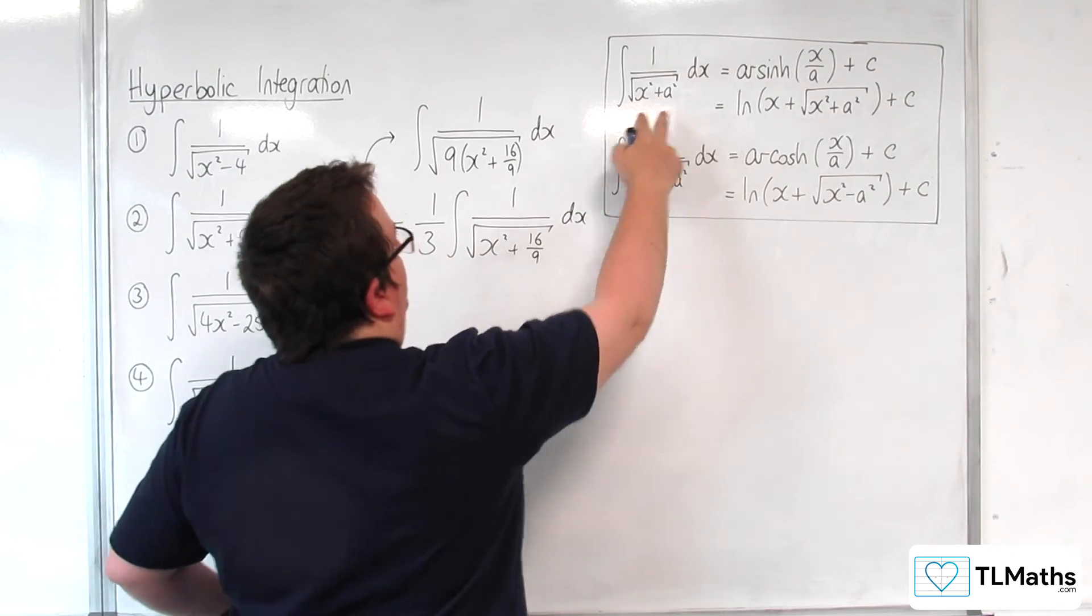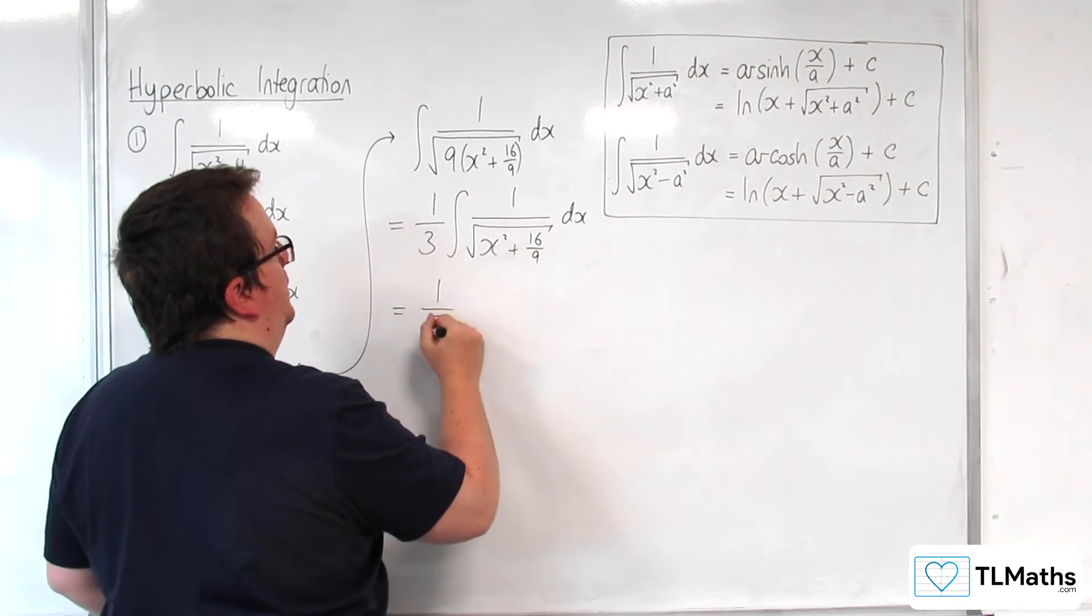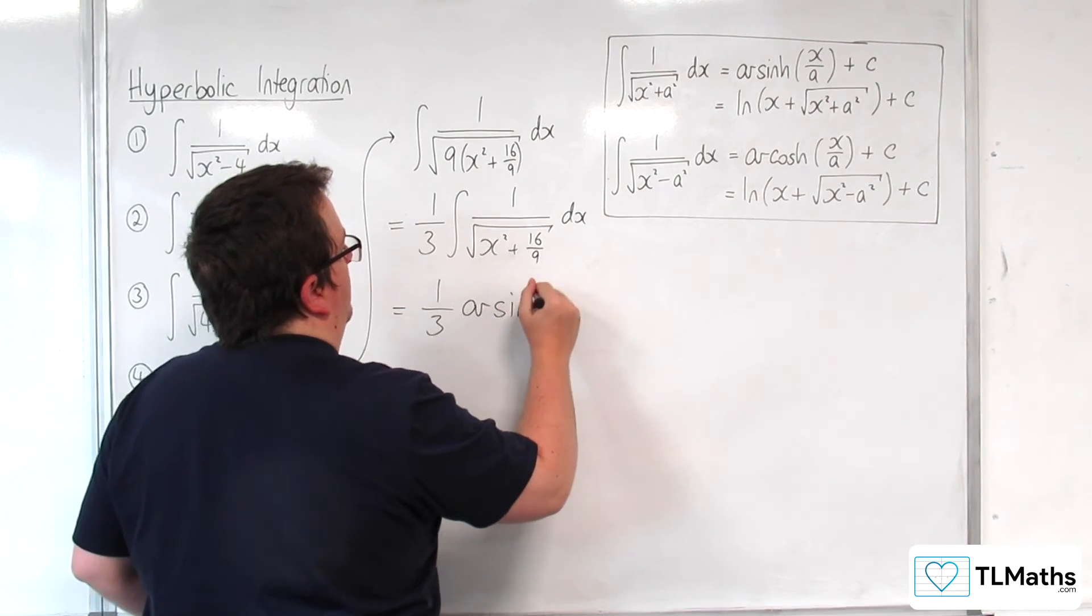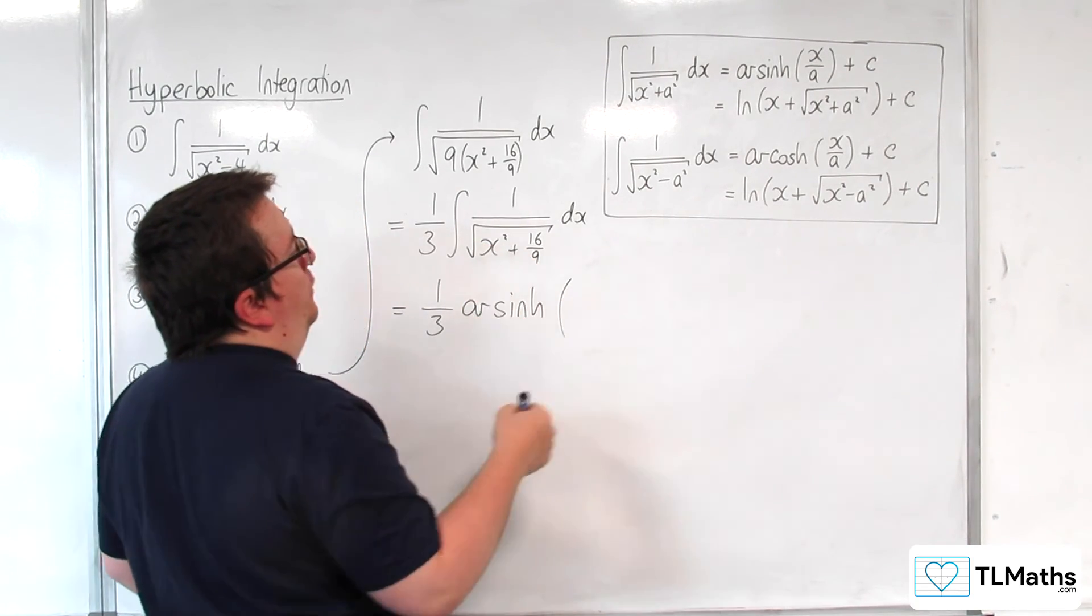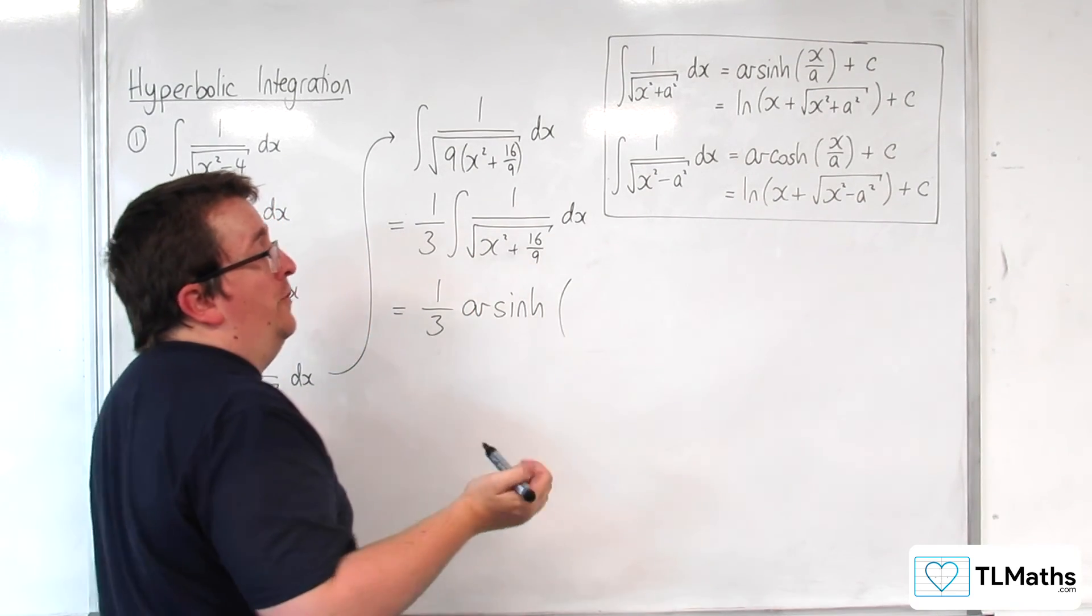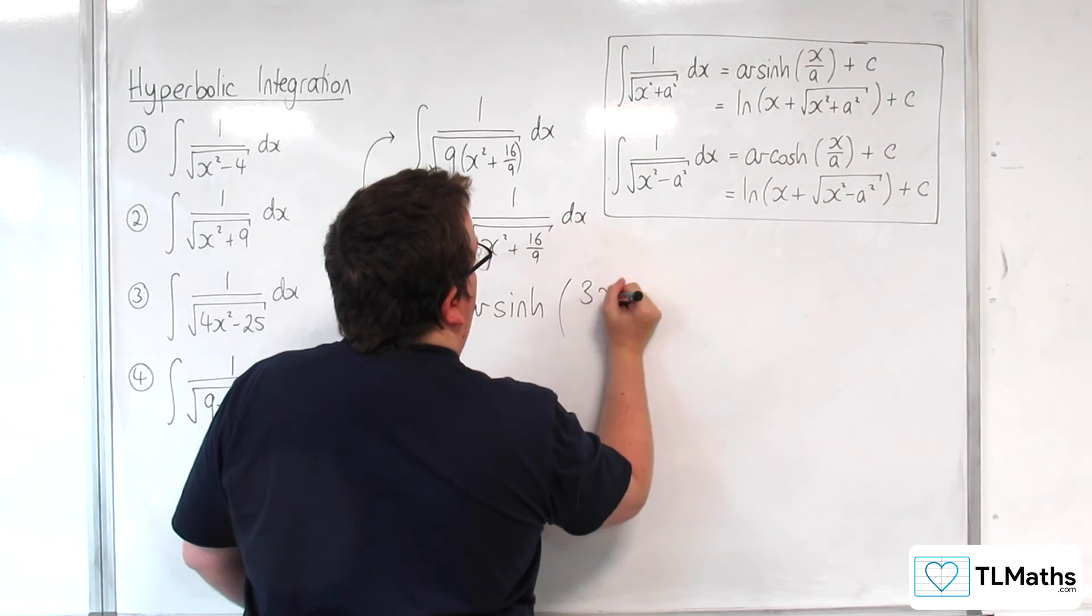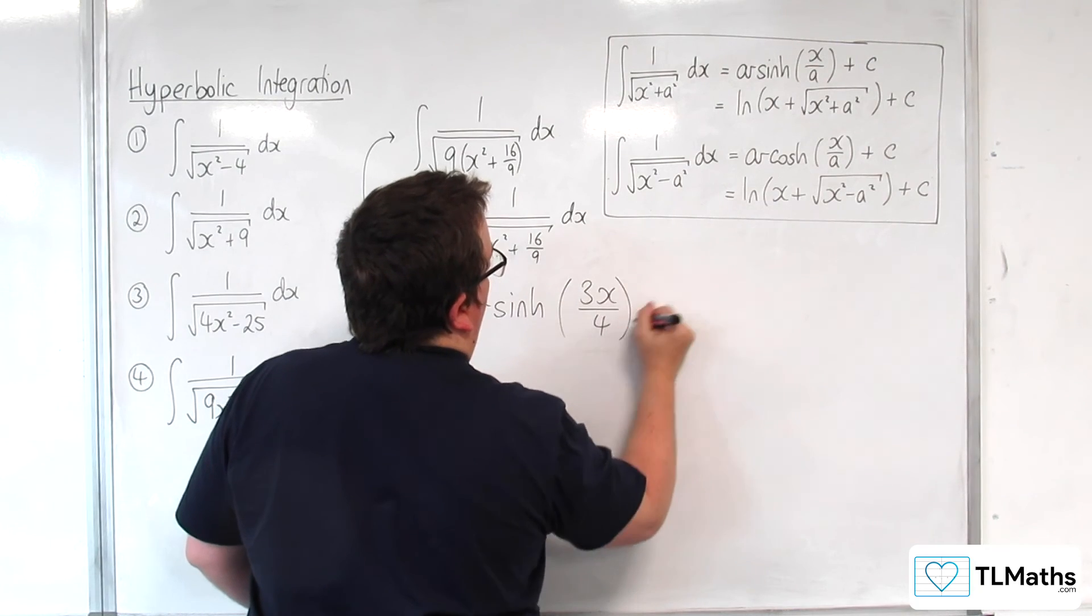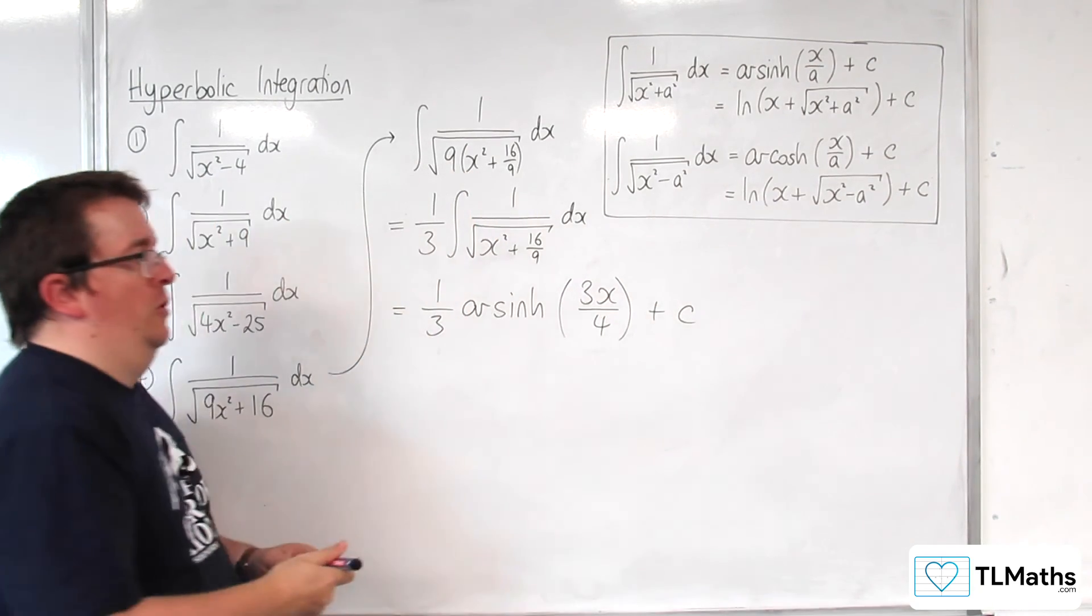And so that's of this form now, so 1 third arsinh of x over a. Now a is going to be 4 thirds, so x over 4 thirds is 3x over 4 plus some constant c.